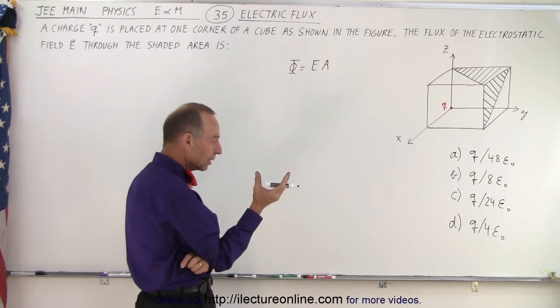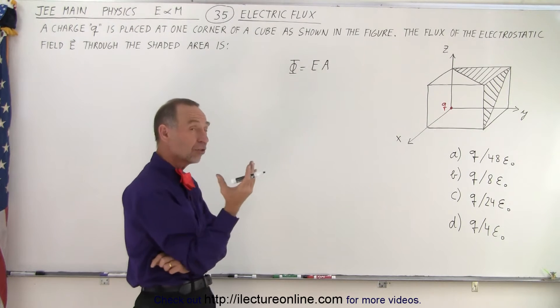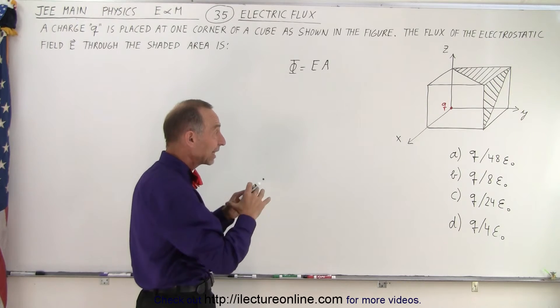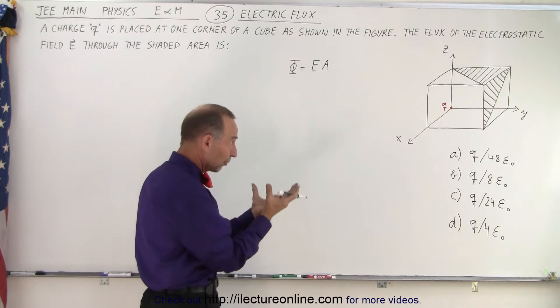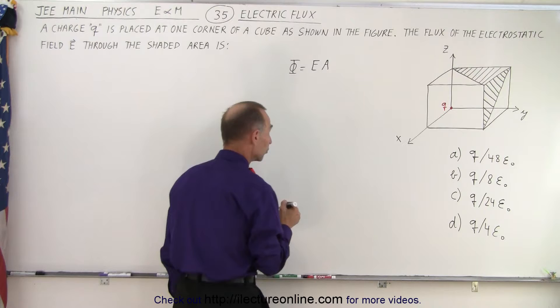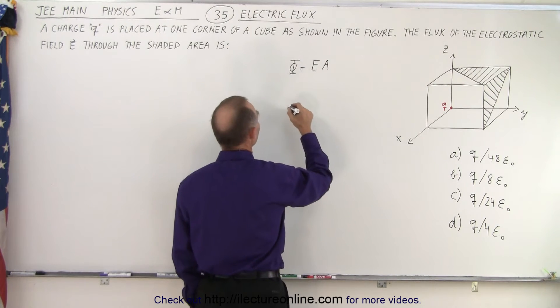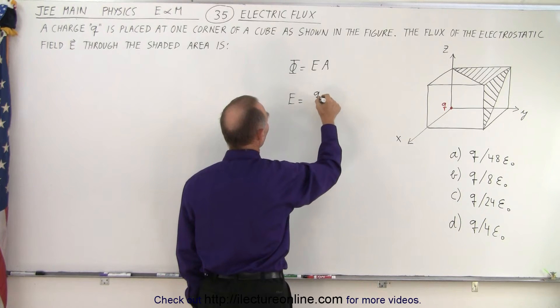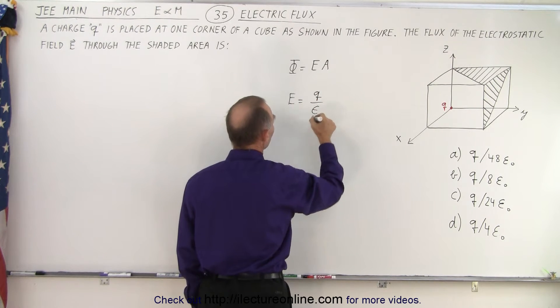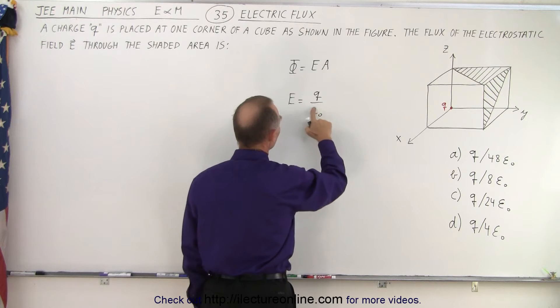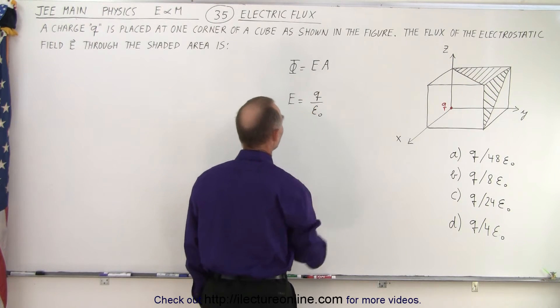Also, using what we'd call Gauss's law, we can think of the electric flux through a Gaussian surface around a point charge as follows. We can also say that the electric field strength is equal to the charge inside divided by epsilon sub naught.